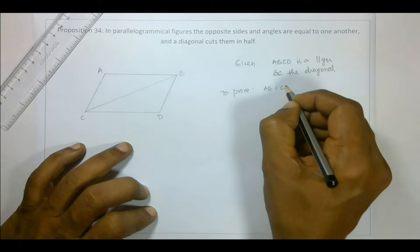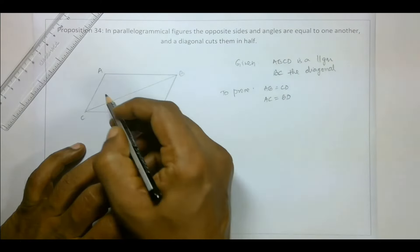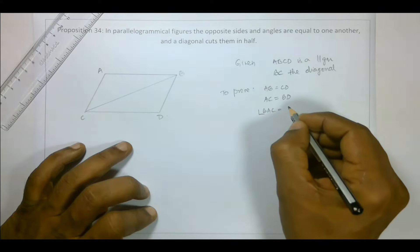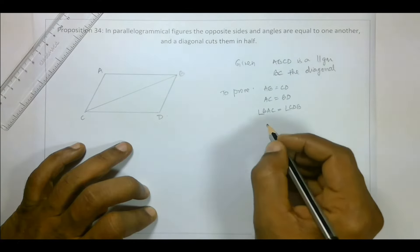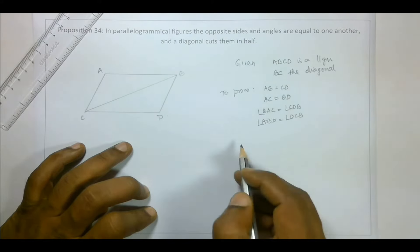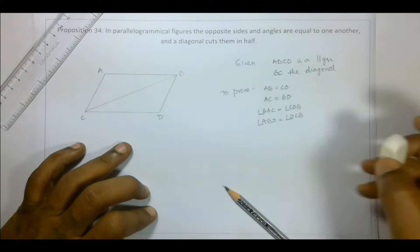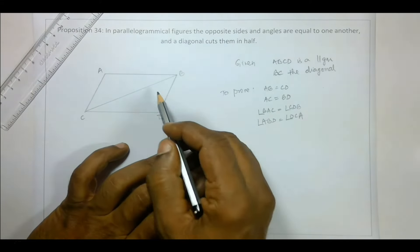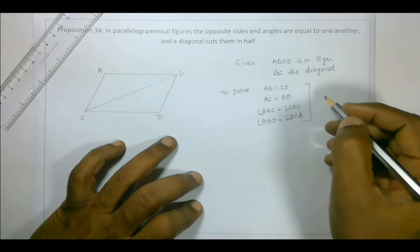Now what do we have to prove? We have to prove: AB is equal to CD, AC is equal to BD, angle ABD is equal to BCA, and angle ABD is equal to ABC.